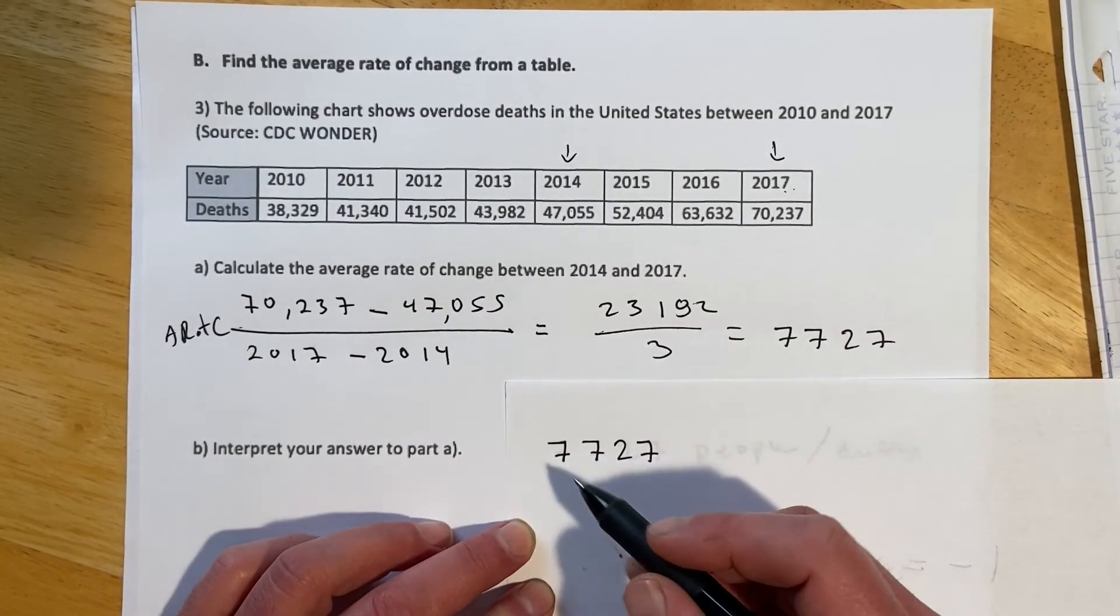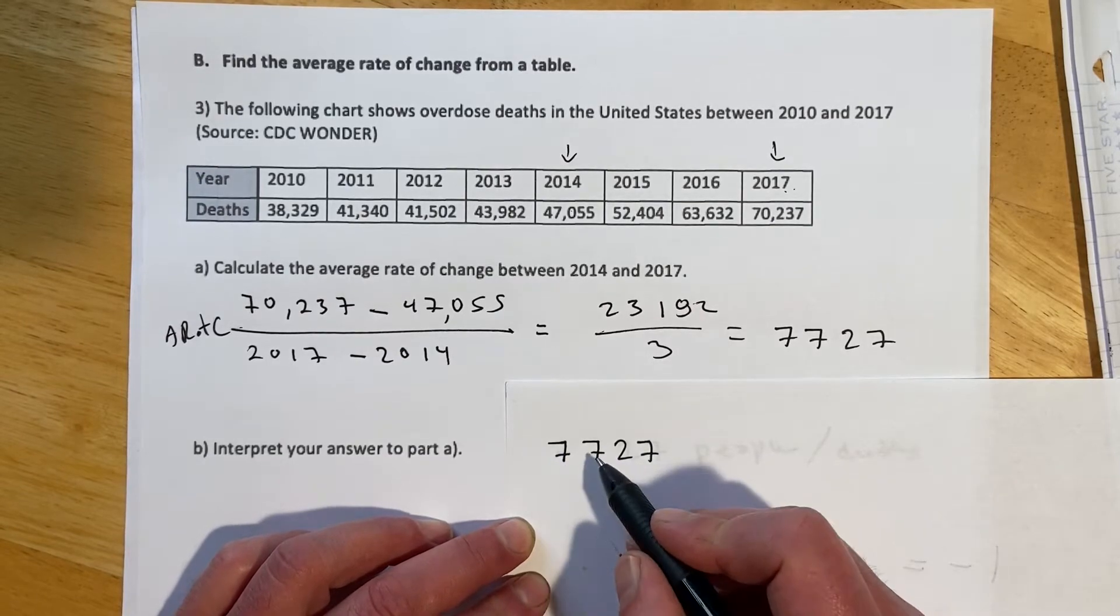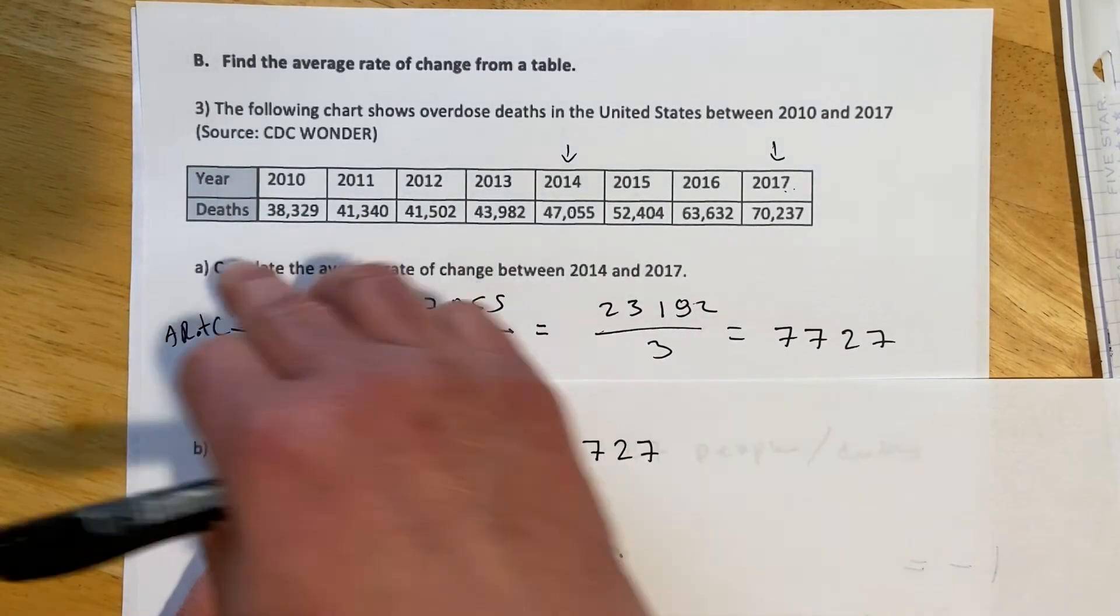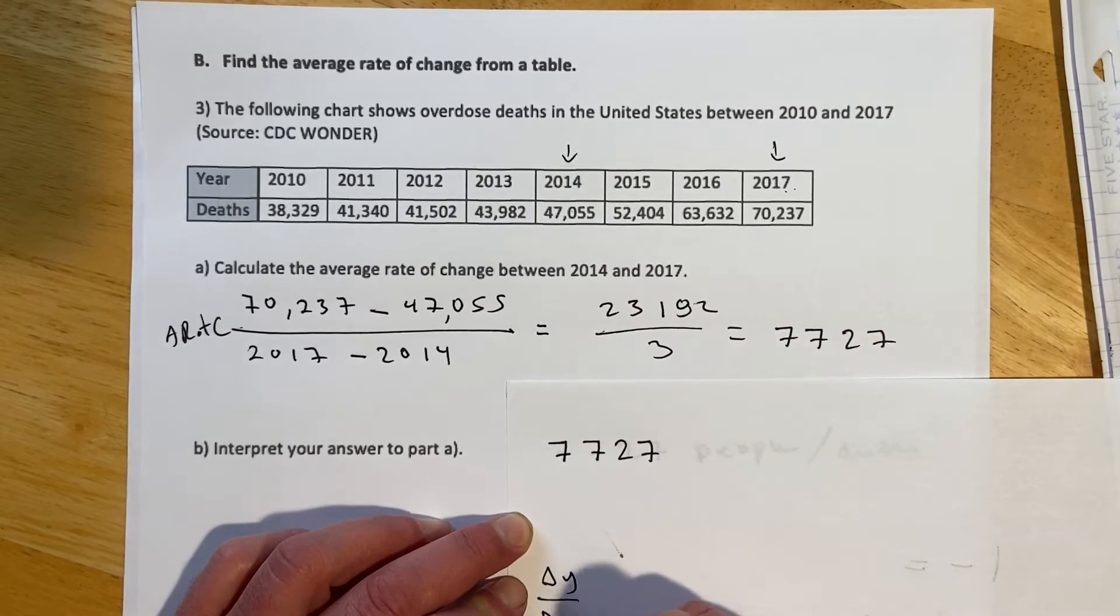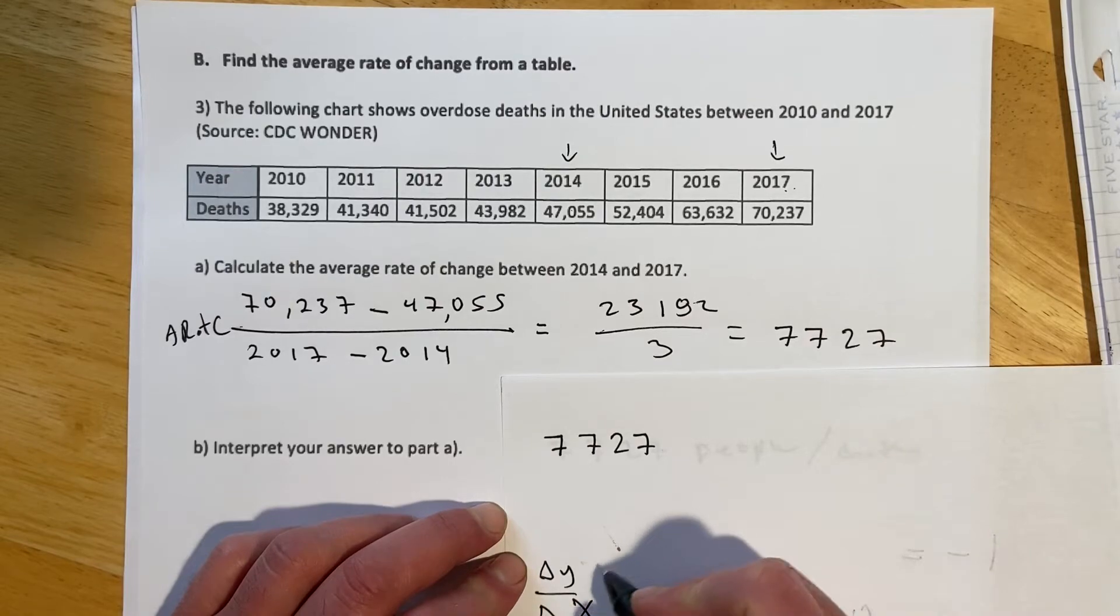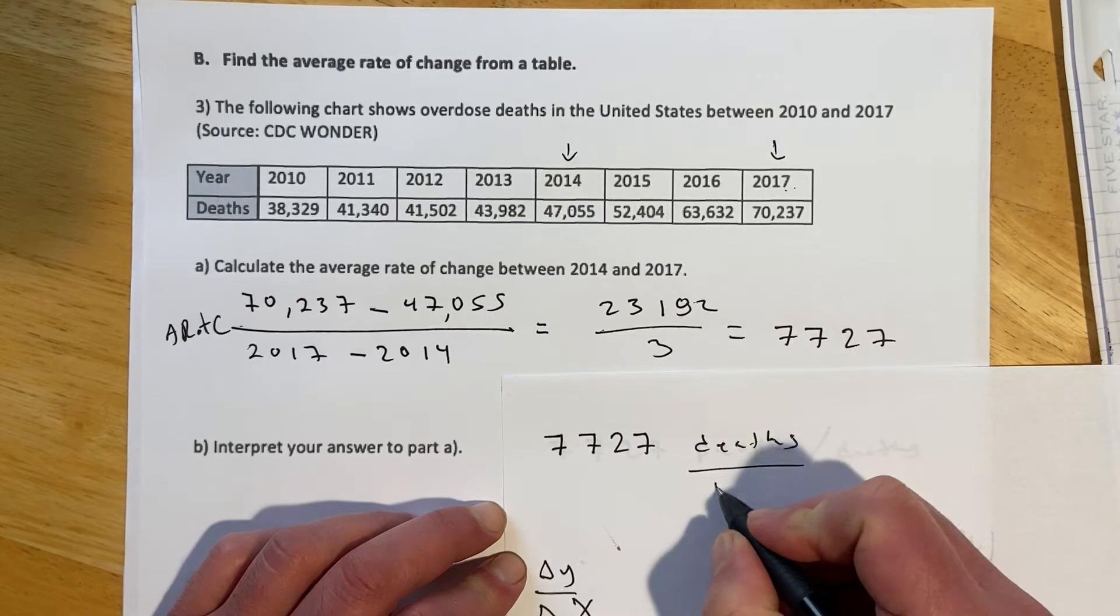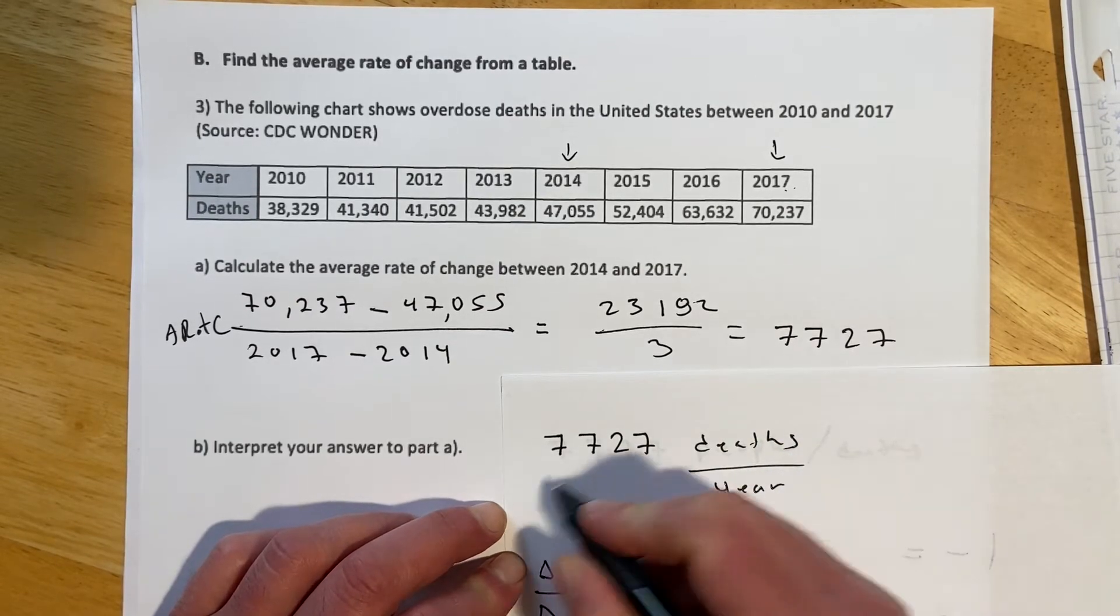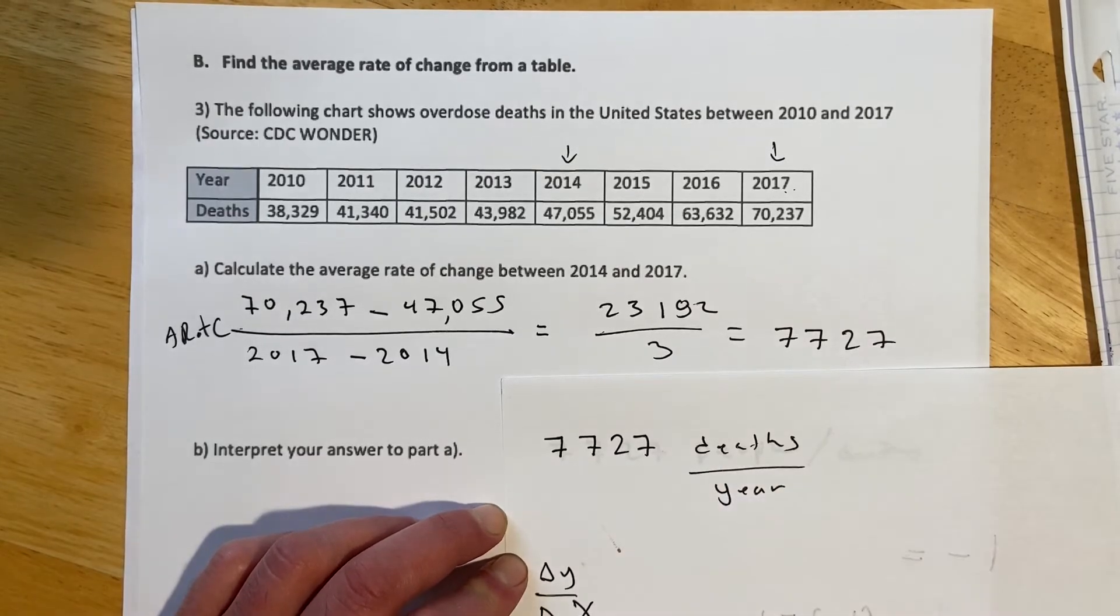And then part B is asking us to interpret our answer to part A. And so this would be 7,727, and we do change in Y over change in X. And so that will be deaths per year. So that means it's increasing by a rate of 7,727 deaths per year.